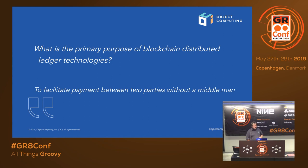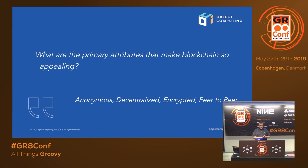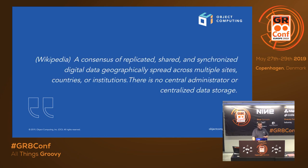What is the primary purpose of all this? The whole point initially was to facilitate payment between two parties without a middleman — no bank, no fees, everyone pays each other. The reasons it's appealing: it's anonymous, it's decentralized, everything's encrypted, and it's all peer-to-peer. If somebody wants to destroy the entire network, it would be very difficult — they'd have to take out most of the internet. A distributed ledger is a consensus of replicated, shared, and synchronized data geographically spread across multiple sites, countries, or institutions — there's no central administrator or centralized data storage.